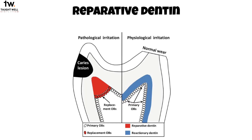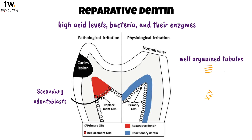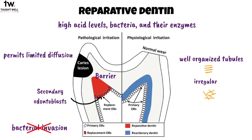The next level of dentinal response is to moderate-intensity irritants by forming reparative dentin. Carious dentin contains pathological factors such as high acid levels, bacteria, and their enzymes, which irritate the pulp and cause secondary odontoblasts to grow. These cells produce reparative dentin over the area of irritation. Its structure varies from well-organized to very irregularly organized tubules depending on the intensity of the stimulus. Reparative dentin functions as a barrier that permits limited diffusion through the tubules, helping stop bacterial invasion and allowing the pulp to heal.